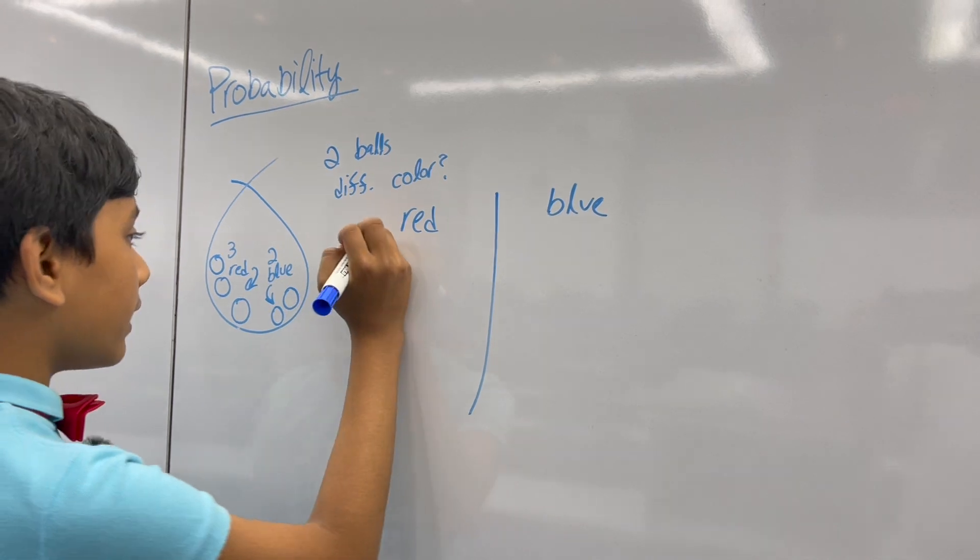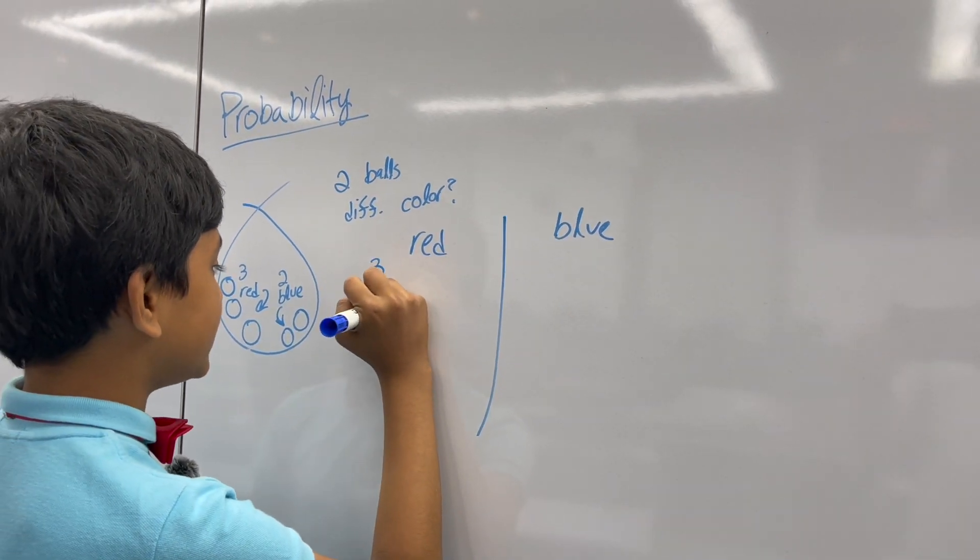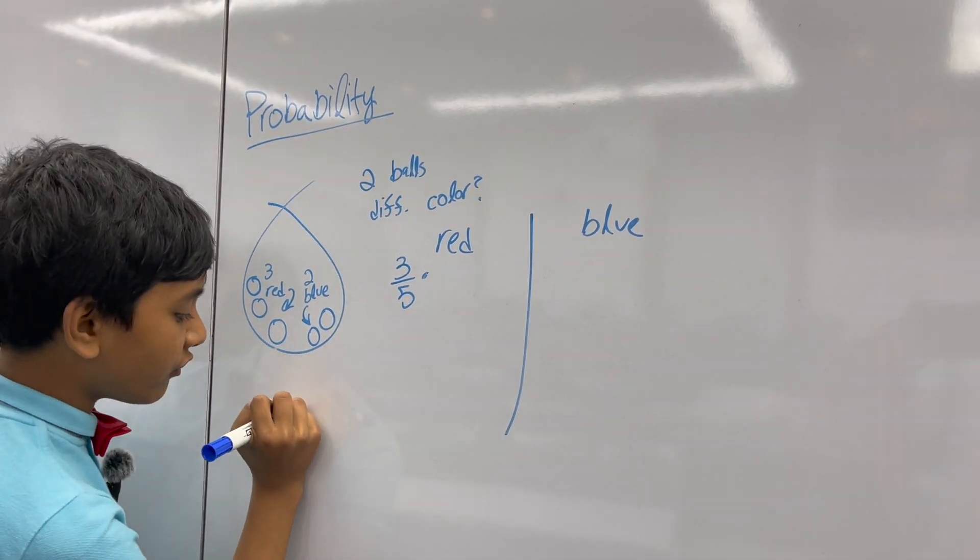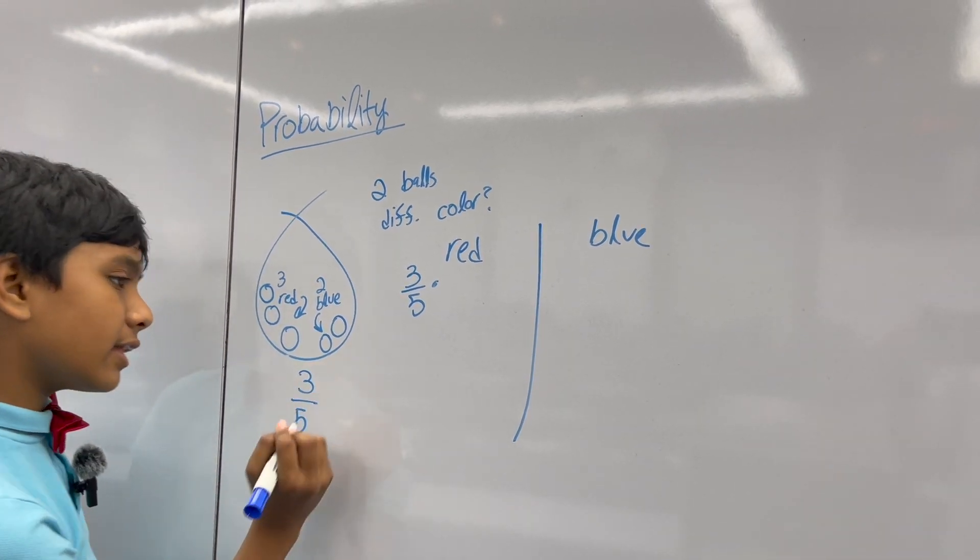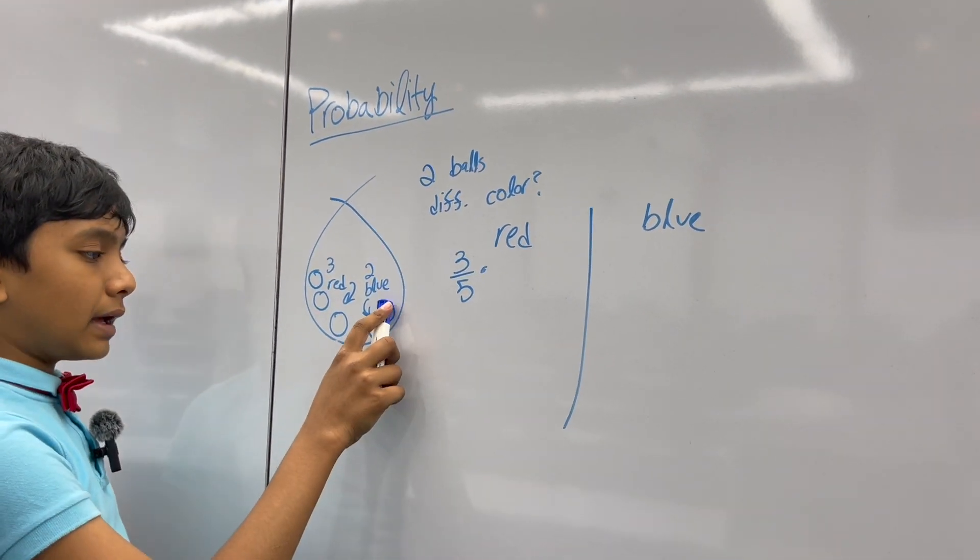So, the first ball could be either red or blue. If it's red, then, if it's red, there's a three-fifths chance of that happening, since there are five balls in total, and three of them are red. Then, that means that we want to pick blue.